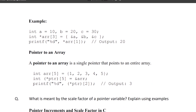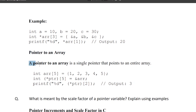Next one is pointer to an array. A pointer to an array holds the address of one entire array. Definition: a pointer to an array is a single pointer that points to an entire array. So one array's address is held in that pointer variable.